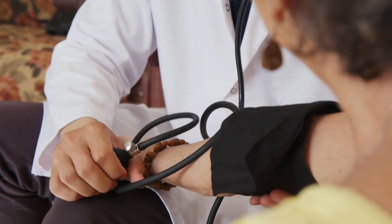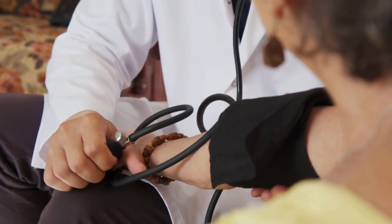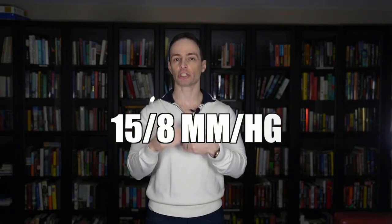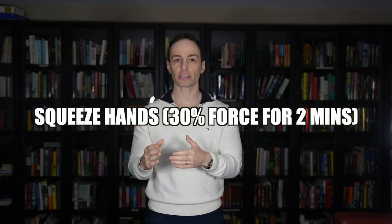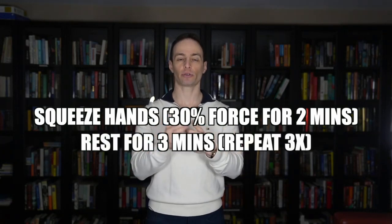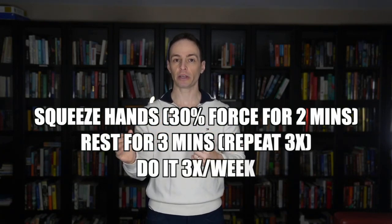For high blood pressure, there are many things you could do to improve it. Both nutrition, supplementation and exercise. But one of the coolest things I've learned from the medical literature is a very simple hand grip exercise that can lower high blood pressure by as much as 15 over 8 millimeters of mercury. And it's just a simple squeeze your hands with about 30% force for two minutes. Then you rest for three minutes and repeat it three more times. Do that three times per week.